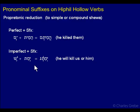If we add a pronominal suffix to an imperfect, like yamit, and we add enu — remember, enu can be either third masculine singular, meaning 'him,' or first common plural, meaning 'us'; it's an ambiguous form — yamit plus enu is yemitenu.